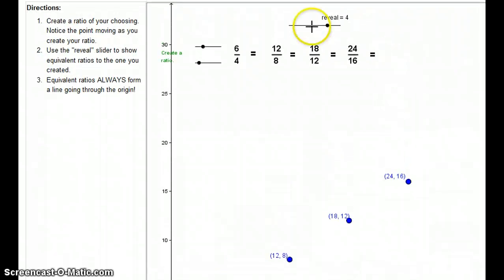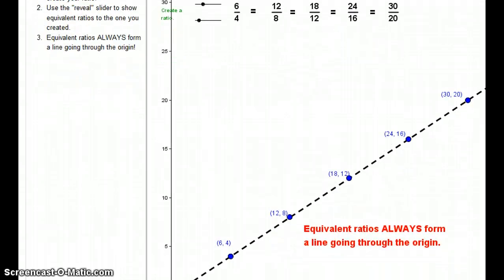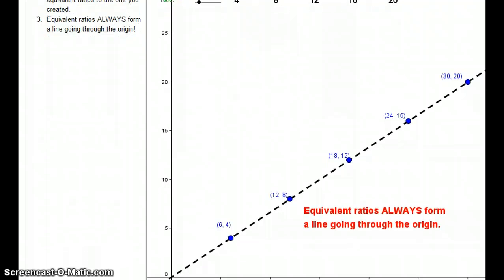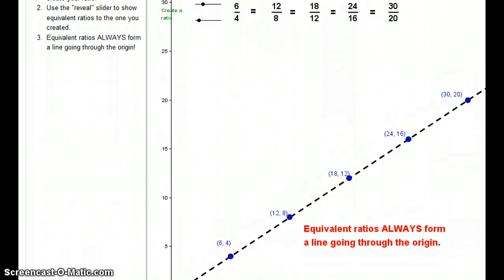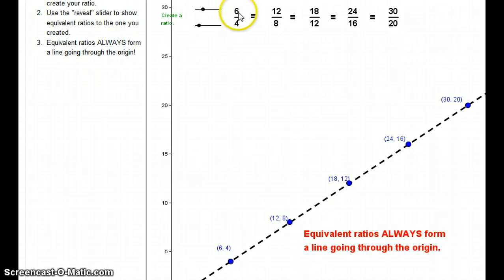Let's take a look at one more. If you've discovered that equivalent ratios always form a line going through the origin, good for you, because that's exactly what it does. Now the 6 is being multiplied by 5 to get to 30, and 4 is being multiplied by 5 to get to 20. 30 is the x-coordinate and 20 is the y-coordinate. Equivalent ratios will always form a line going through the origin because they are constant.